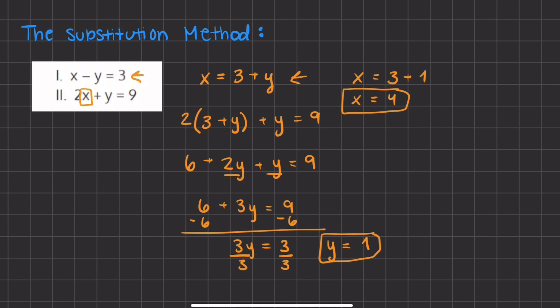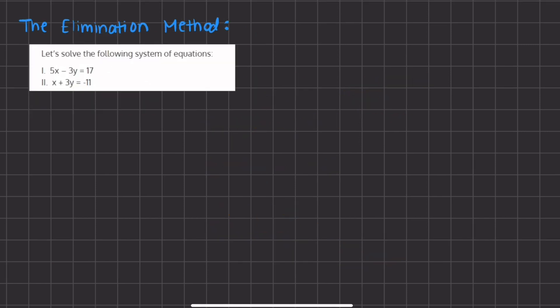Now we're going to show how to solve a system of equations using the elimination method. With elimination, we add or subtract the equations from one another in order to eliminate one of the variables, leaving a new expression with only one variable. In this case, we have 5x minus 3y equals 17 and x plus 3y equals negative 11. As you can see, we have a negative 3y and a positive 3y, so if we add the two equations together, the y terms will cancel out and we'll be left with only x.